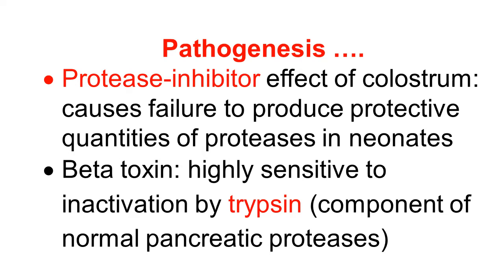Colostrum contains protease inhibitors, which also causes reduced protective quantities of protease in neonates, because protease is a very important deciding factor for the proliferation, growth, and beta-toxin production by the organism. Similarly, beta-toxin is highly sensitive to inactivation by trypsin. Trypsin digests beta-toxin, and trypsin is a component of normal pancreatic proteases.